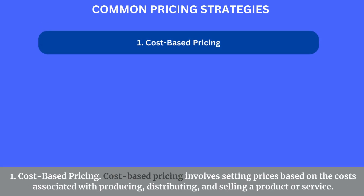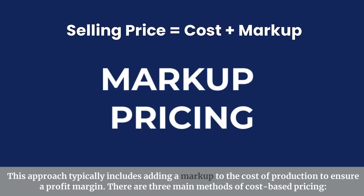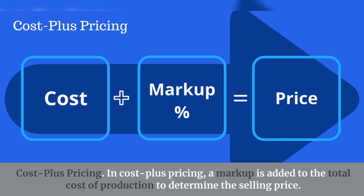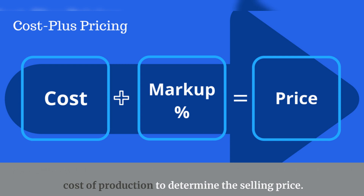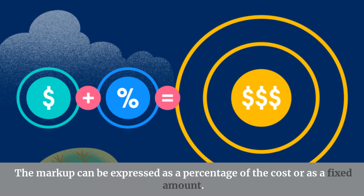1. Cost-based pricing involves setting prices based on the costs associated with producing, distributing, and selling a product or service, typically by adding a markup to the cost of production to ensure a profit margin. There are three main methods. Cost-plus pricing: a markup is added to the total cost of production to determine the selling price; the markup can be expressed as a percentage of the cost or as a fixed amount.